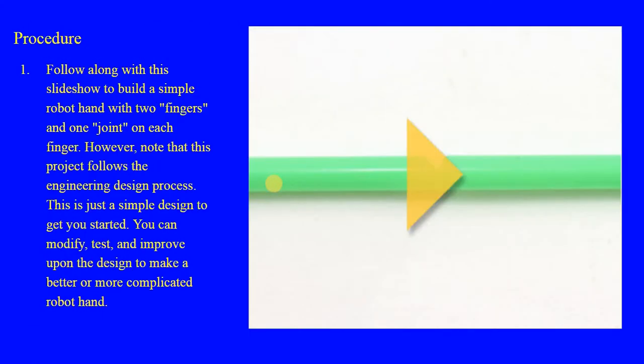I'm gonna show you each slide. What I need for you to understand is that you're gonna be creating the fingers and each finger is gonna have a little joint. This is the simple model. You will be able to adapt it, modify it, test and improve upon the design and make it better and more complicated robot hand. But you need to know the first steps.